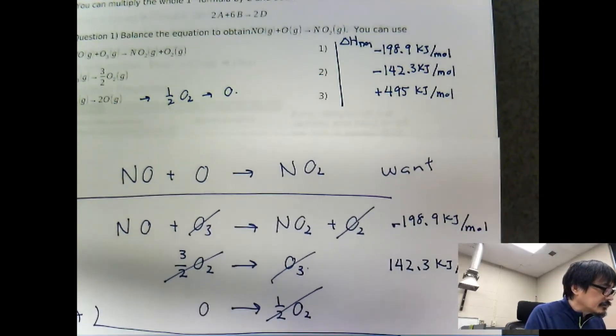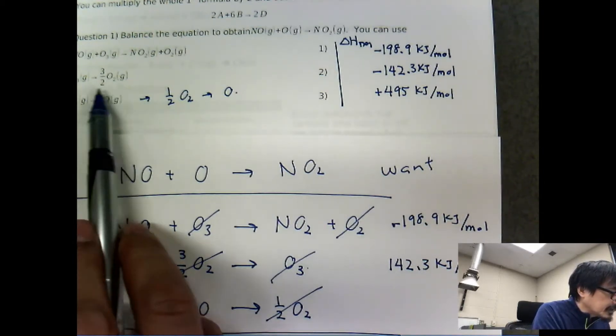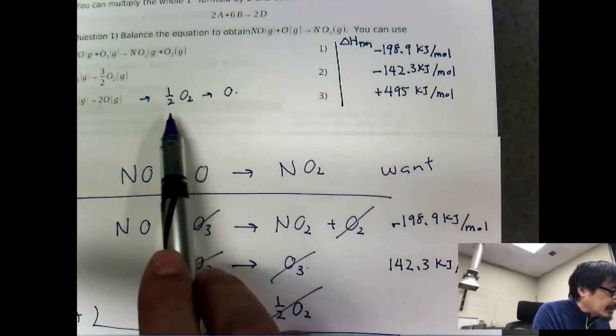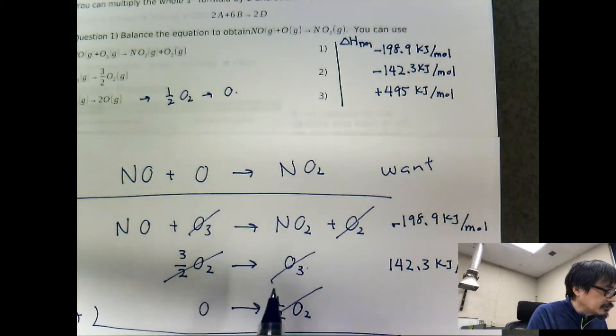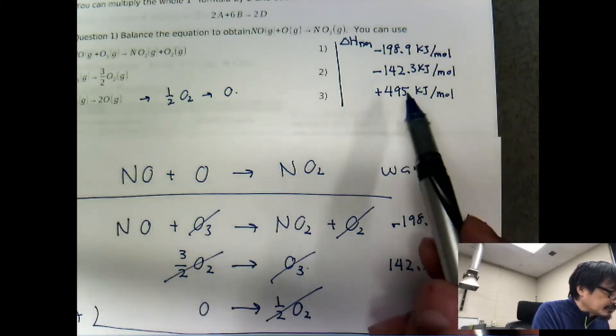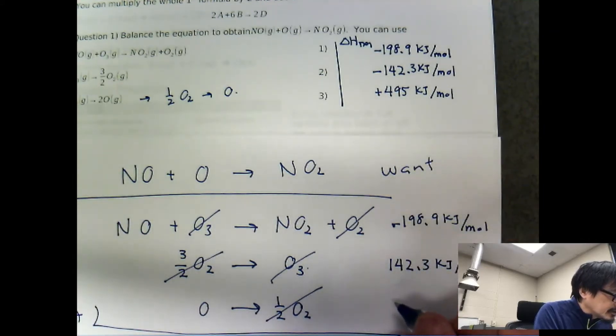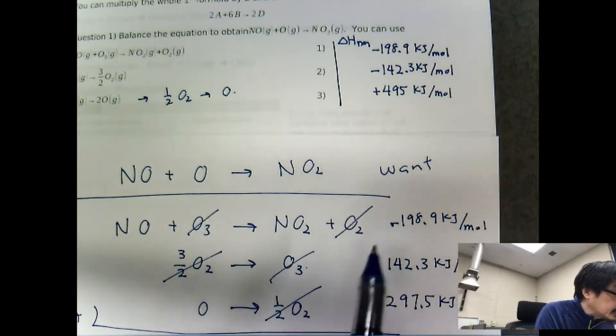What about the last reaction right here? Originally it started something like this, and then we made it look like this to fit into this right here. So we just half the stuff. Half of this is actually 297.5 kJ per mole. Now, the question is,